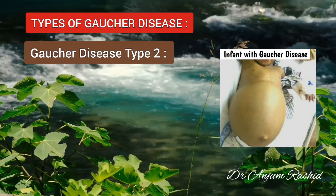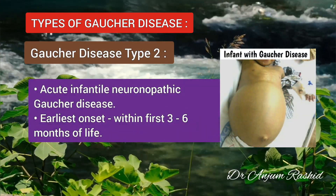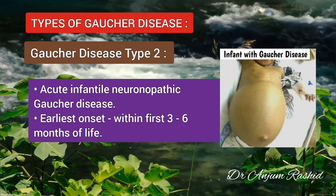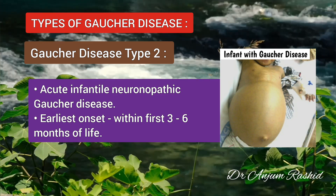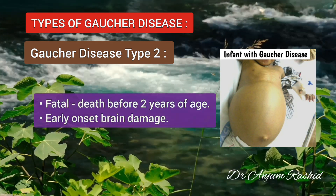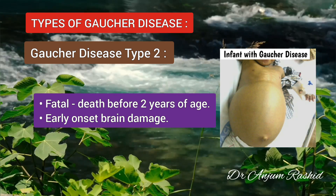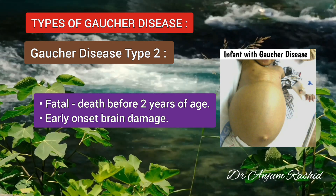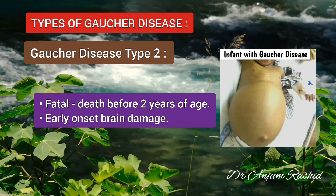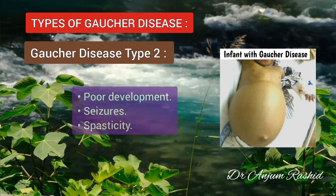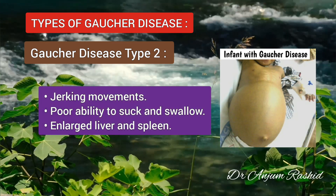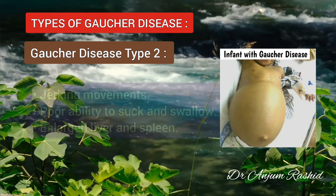Gaucher disease type 2, also called acute infantile neuropathic Gaucher disease, has the earliest onset of all types. Symptoms first become apparent within the first 3 to 6 months of life, and it is fatal, usually causing death before 2 years of age. Signs and symptoms include early onset brain damage that is severe and rapidly worsening, as well as poor development, seizures, spasticity, jerking movements, poor ability to suck and swallow, and large liver and spleen.